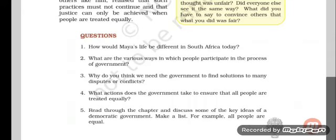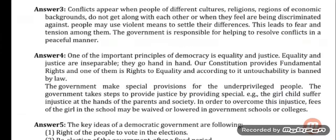Question number 4: What actions does the government take to ensure that all people are treated equally? The answer is, one of the important principles of democracy is equality and justice. Equality and justice are inseparable — they go hand in hand. Our constitution provides fundamental rights, and one of them is the right to equality. According to it, untouchability is banned by law. The government makes special provisions for underprivileged people. For example, fees for the girl child in school may be waived or lowered in government schools or colleges to overcome injustice.